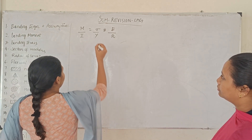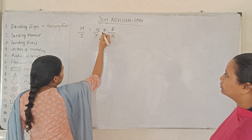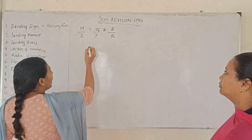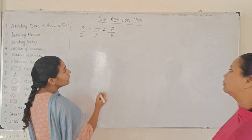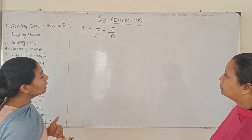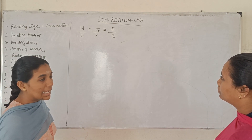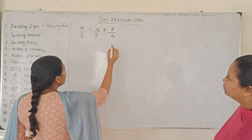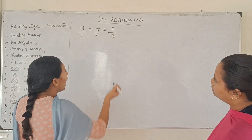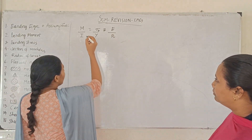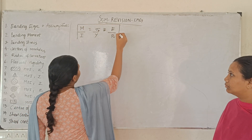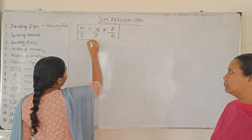Sigma b is bending stress. Y is the distance of any layer from the neutral axis. E is the Young's modulus, R is the radius of curvature. This is the bending equation.